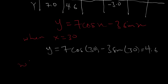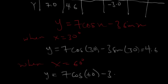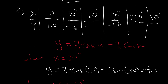When x = 60°, y = 7cos60 − 3sin60. When you do this, you should get 0.90, so we put 0.90 here. You do it for all values of x, and this gives us our complete table. So this is question 6a.